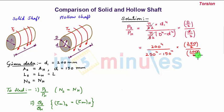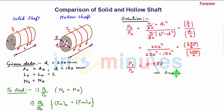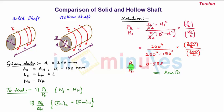Solving this gives the ratio of power transmitted by the solid shaft to the hollow shaft as 0.588. This is the first answer. For the given cross-sectional area, length, maximum shear stress, and speed, the solid shaft transmits only 0.588 times the power of the hollow shaft — meaning the hollow shaft transmits more power.